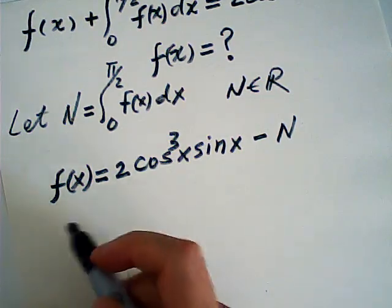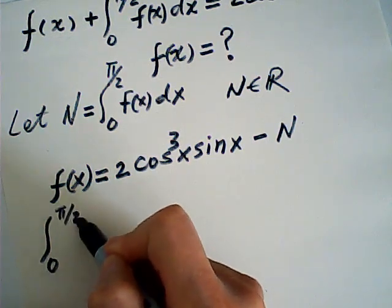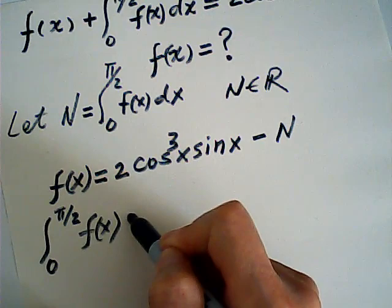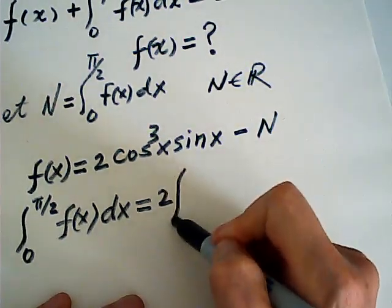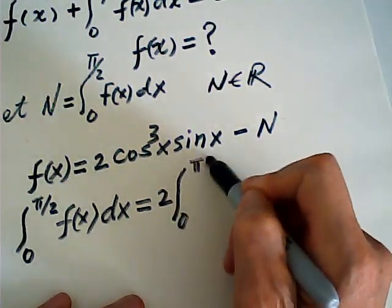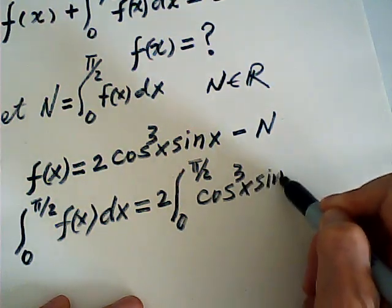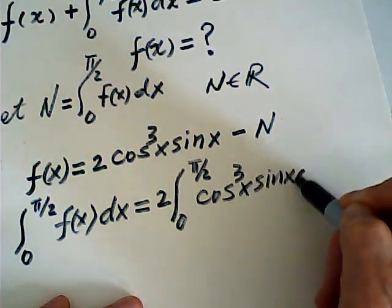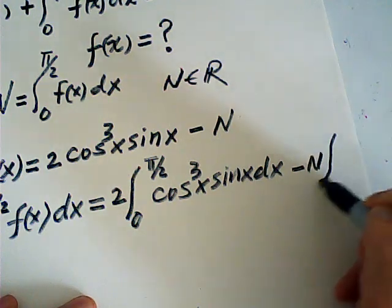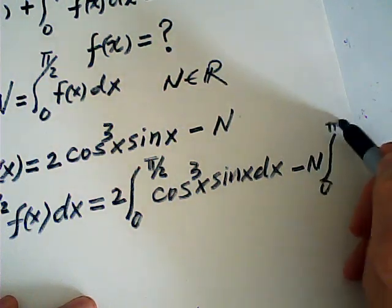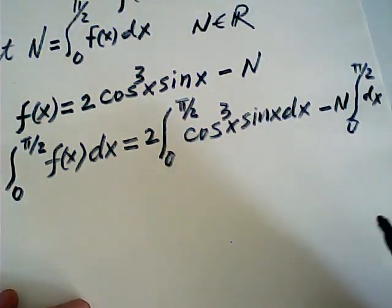Then we integrate both sides from 0 to half pi. The integral of f of x dx will be equal to 2 times the integral from 0 to half pi of cosine cubed x sine x dx minus N times the integral from 0 to half pi dx. That will be very easy, easier.